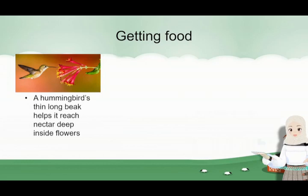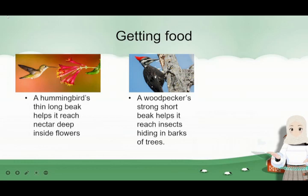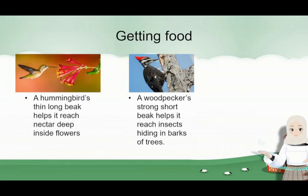A hummingbird has a thin, long beak that helps it reach nectar deep inside flowers. Biasanya burong, ia punya beak just this short, tapi the hummingbird has a very long beak so that it can reach until the end to get the nectar untuk dia makan. Another example is a woodpecker, which has a strong short beak — macam tukul, macam hammer, atau macam drill — so that it can reach the insects hiding inside the barks of trees. The woodpecker buang all the outer parts supaya dapat dia sampai to the insects on the inside.